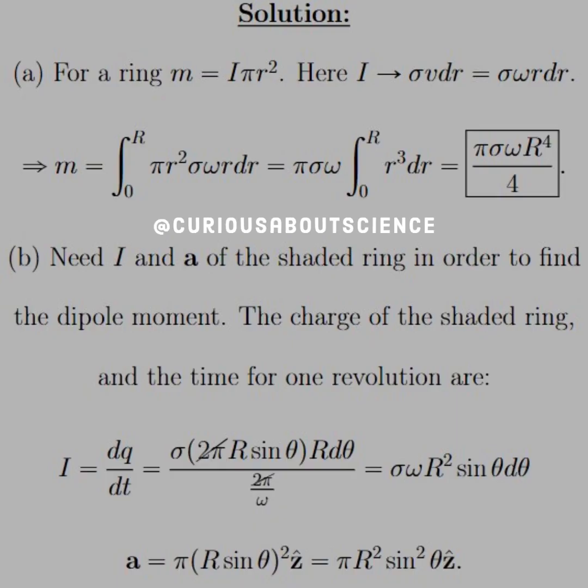So for part A, we see that for a ring, the vector area is just a circle. So M is equal to I pi r squared. Here, the thing that needs modification is the current.